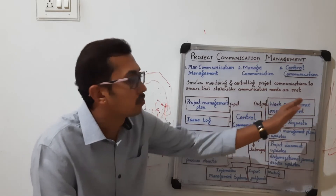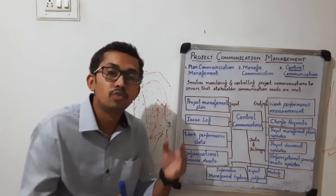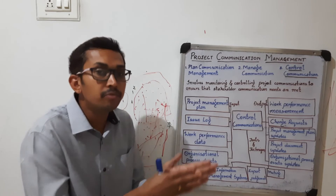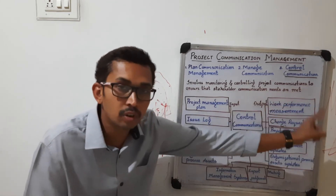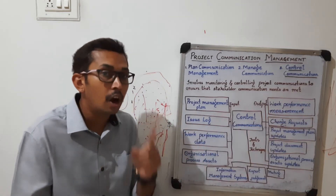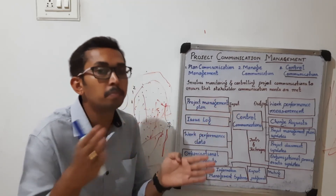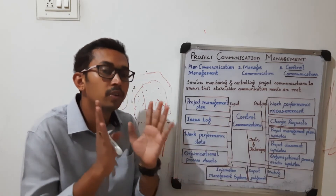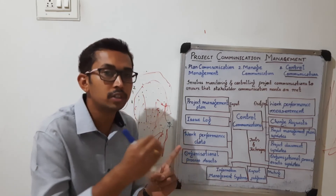The output is work performance measurement. Here we note down the current status and check whether all activities are as per the project management plan. If there are any deviations or lags in activities, necessary action is taken. This also includes checking cost and budget — whether the project is within budget or not.